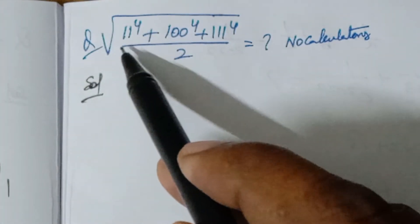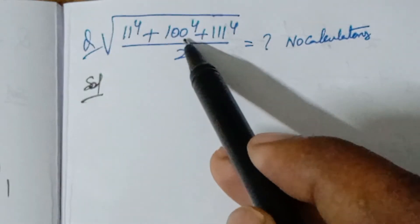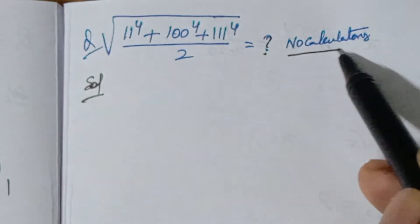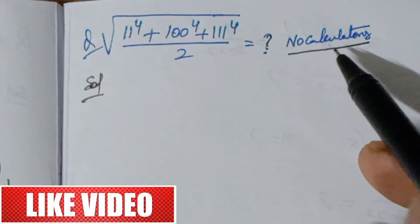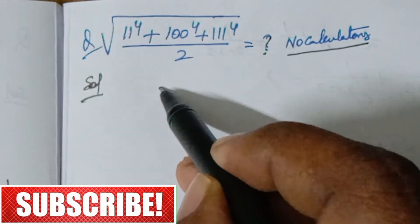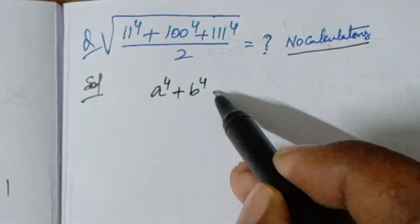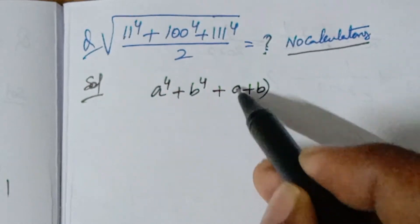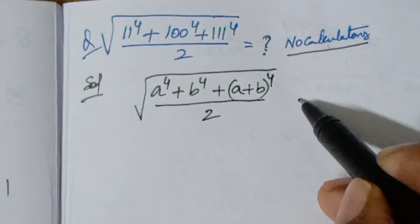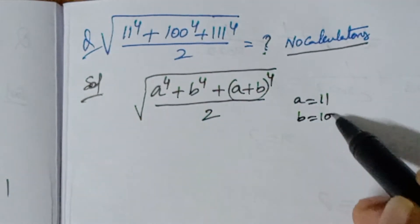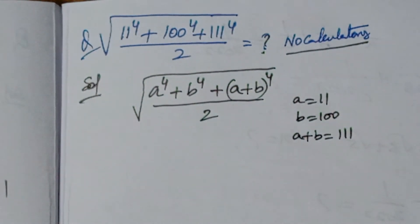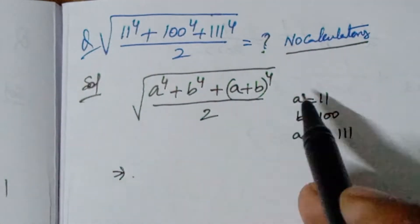Good morning children. The question is: given the square root of 11 to the power 4, plus 100 to the power 4, plus 111 to the power 4, divided by 2 — what is the value? You should not use a calculator. Here this is in the form of a⁴ + b⁴ + (a+b)⁴ divided by 2, where a = 11, b = 100, and a + b = 111.